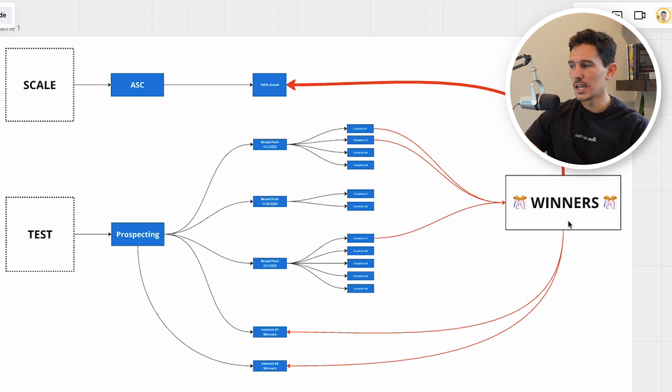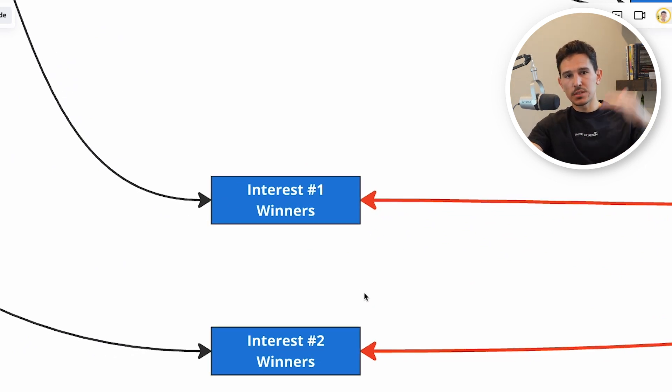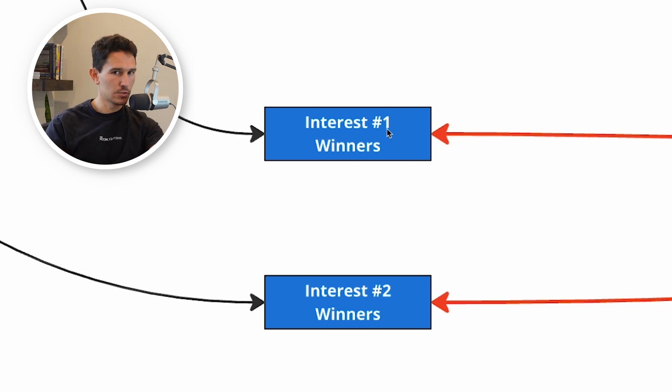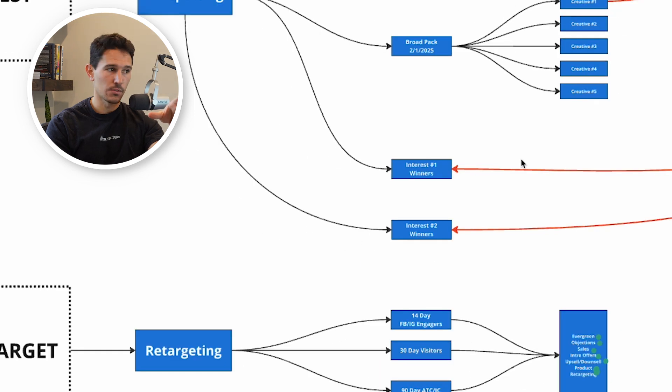We're also taking these winners and launching interest-based campaigns — this is different than what most people do. Everyone likes to run full broad, but I like to be a little different. Interests are single interest — very different than what most people do. Most people stack a bunch of interests; if you're a shoe brand, they'd stack Nike, Adidas, Under Armour into one group and wind up with 300 million people to target, which is basically a broad campaign. What we do is use single interest ad sets — one single interest, like Nike alone. If that interest works, create a second. Over time you'll know what interests work and keep a log of that. When you combine interest with broad packs, you'll generally see improved return on ad spend.